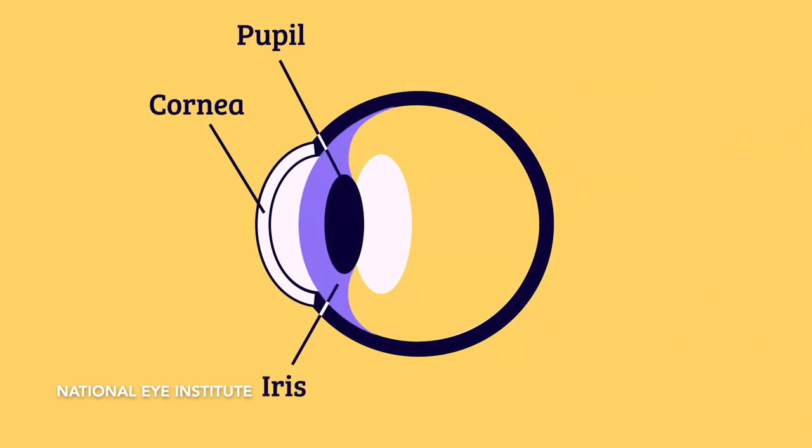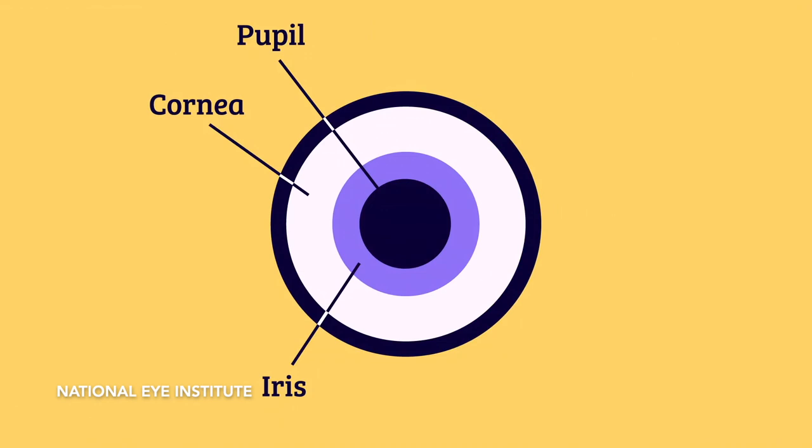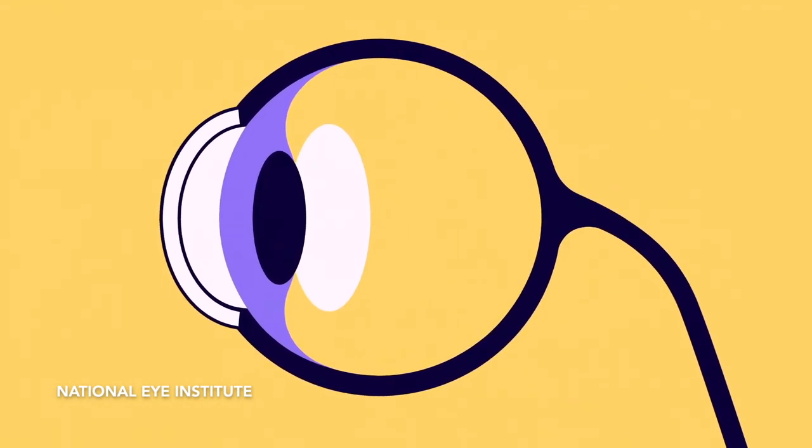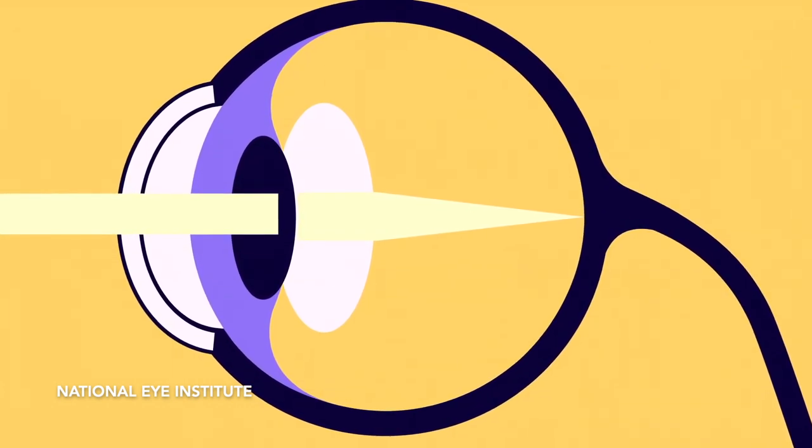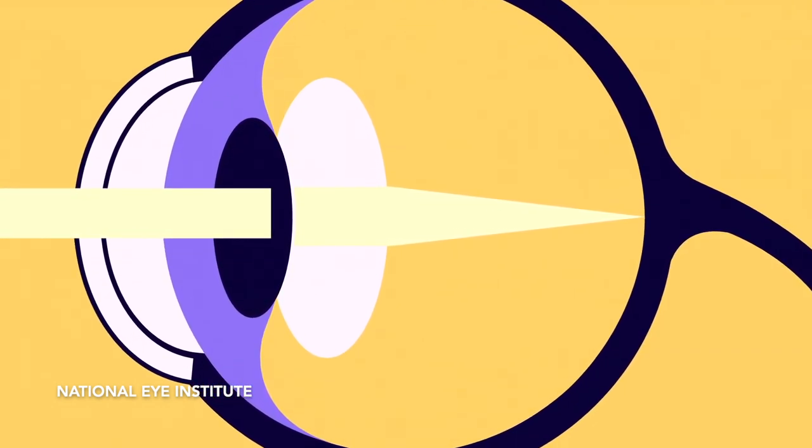The colored region of the eye called the iris controls how wide the pupil is and how much light can enter the eye. The lens then focuses the incoming light at a region on the back of the eye called the retina.